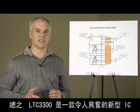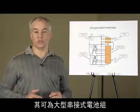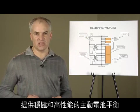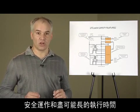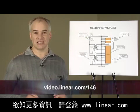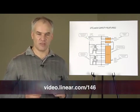In conclusion, the LTC 3300 is a new and exciting IC which provides robust, high-performance active cell balancing, safe operation, and maximum runtime for large, series-connected battery stacks. For more information, visit us at Linear.com. Thank you for watching.